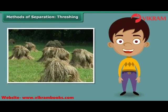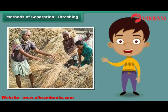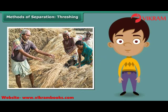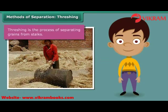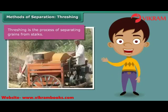You must have seen bundles of wheat or paddy stalks lying in fields after harvest. Have you pondered how a farmer separates the grains from these stalks? Once the wheat or paddy crop is harvested, the farmer ties the stalks together to form bundles. He then leaves the bundles to dry in the sun. Once the stalks are completely dried, the farmer beats them against a hard floor to free the grains. This process of separating grains from stalks is known as threshing. Bullocks, oxen and machines known as threshers are also used for this purpose.